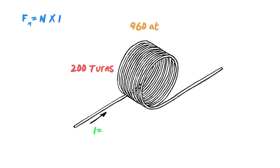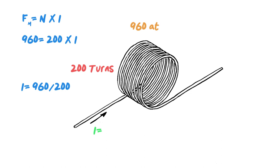Let's take another look at the whiteboard and fool around with some things. I got rid of that three turns. Now I've got 200 turns and 960 ampere turns. So I have my FM — I know I've created 960 ampere turns. With 200 turns, I'm trying to figure out what the current is. We just plug in what we know: FM is 960, turns is 200, and we're solving for current. Dividing both sides, I is equal to 960 divided by 200, which gives us 4.8 amps. So 4.8 amps flowing through this circuit with 200 turns gives us 960 ampere turns.